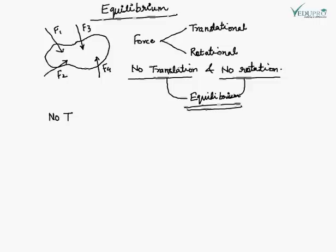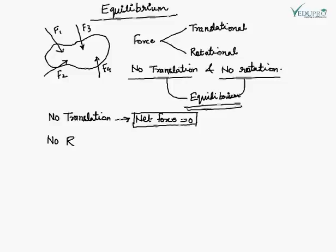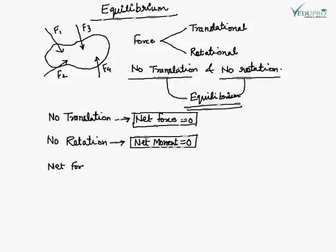If body is not translating — so for no translation — net force on the body should be zero. اگر body پہ لگنے والا net force zero ہو جائے گا تو body کہیں بھی move نہیں کرے گی۔ اور اگر body rotate بھی نہیں کر رہی ہے — if there is no rotation in the body — it means net moment or torque is also zero, then we can say that body is not rotating. So if a body is in equilibrium then net force as well as net moment on the body should be zero. اگر کسی body پہ لگنے والا net force اور net moment zero ہے then we can say the body is in equilibrium.